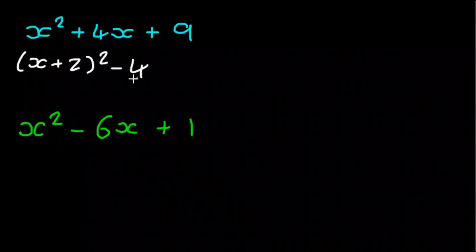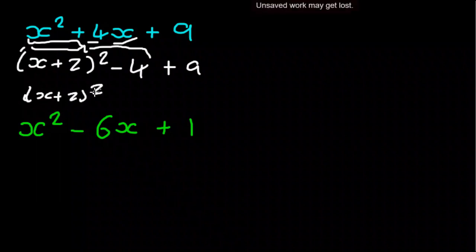So we take the 4 off, and then we still have our plus 9. So this bit here is equal to this bit, they're the same. And then the plus 9 is just the plus 9. And then obviously we can combine the plus 9 and the minus 4.